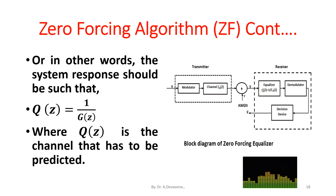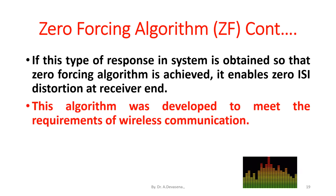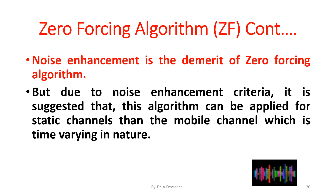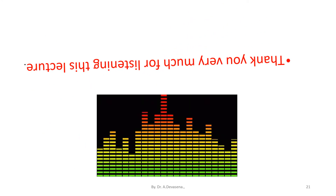In other words, the system response should satisfy Q(z) = 1/C(z), where Q(z) is the equalizer and C(z) is the channel. When this response is obtained, the zero forcing algorithm achieves zero ISI distortion at the receiving end. This algorithm was developed to meet the requirements of wireless communication. Noise enhancement is the main demerit of the zero forcing algorithm; therefore, it is better suited for static channels than for time-varying mobile channels.